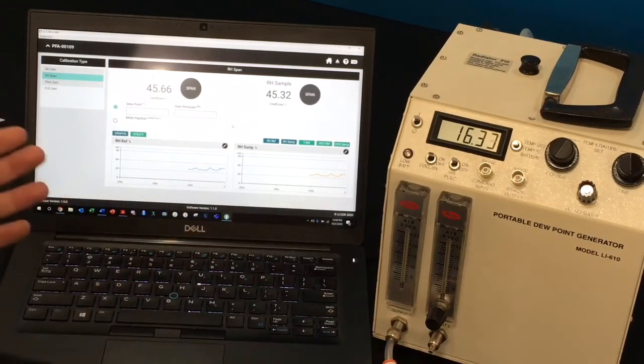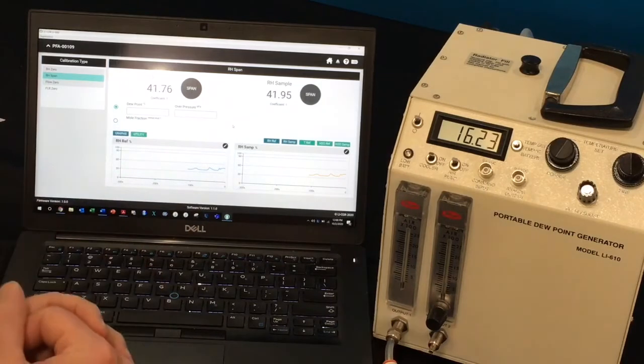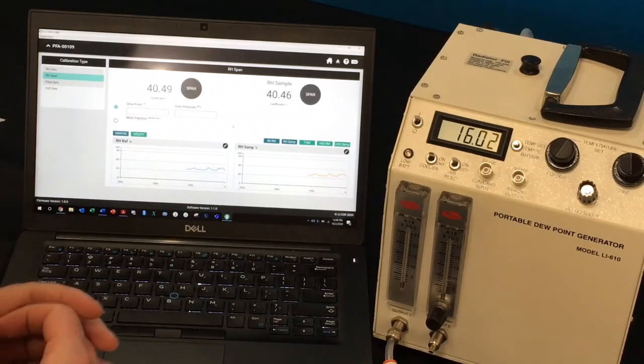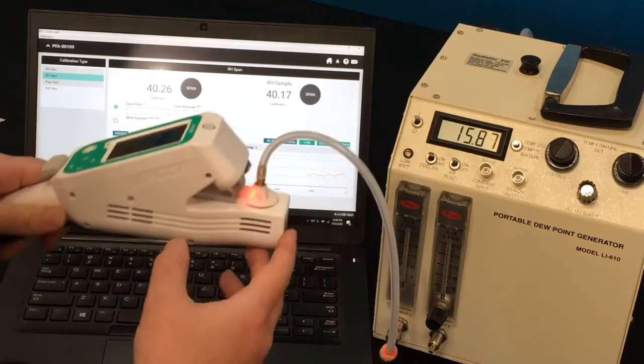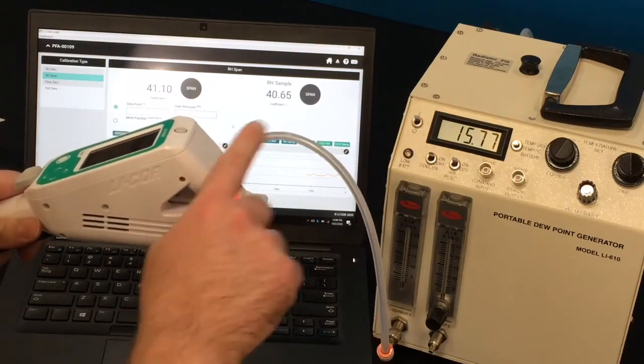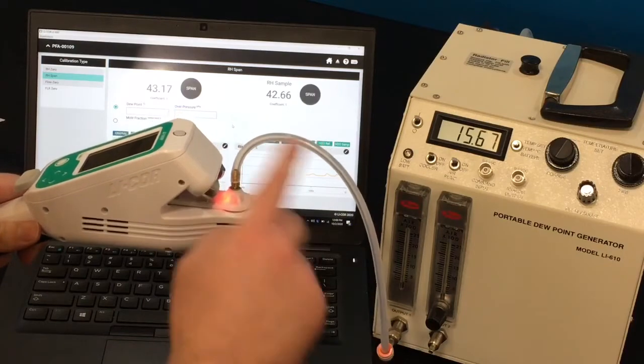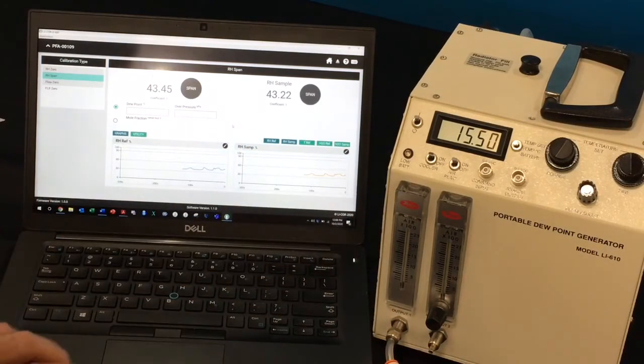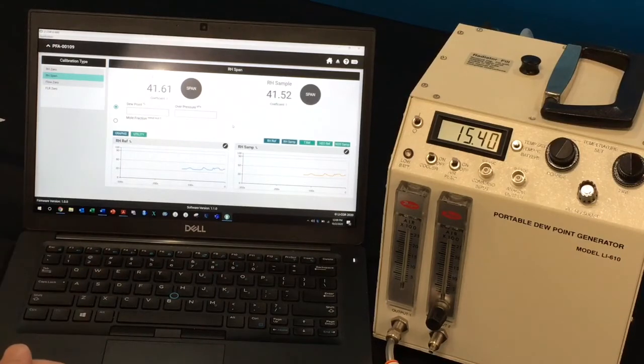But you'll want to let this dew point generator run for about 30 minutes just to make sure that all of the water vapor gets flushed out of the tubing and into the instrument itself. You also want to make sure that you use as short of tubing as possible between the two instruments so that water vapor does not stick to the tubing as much.